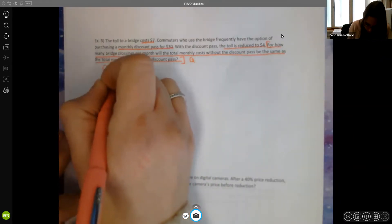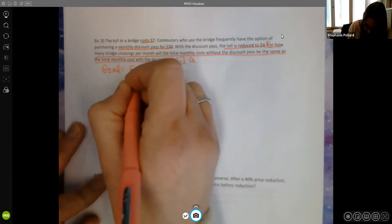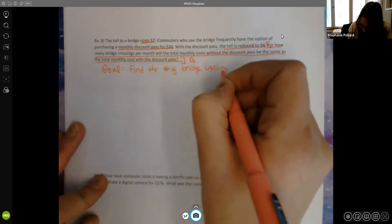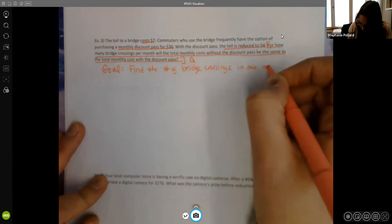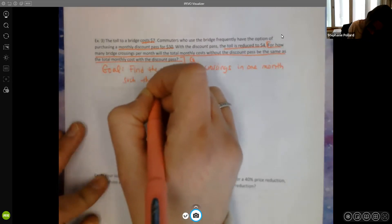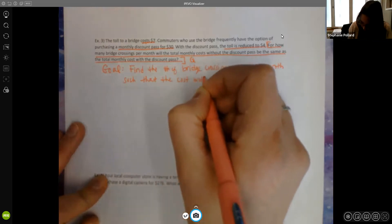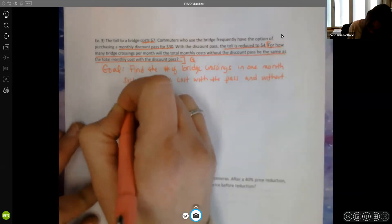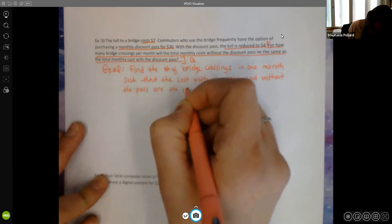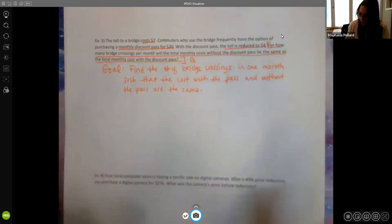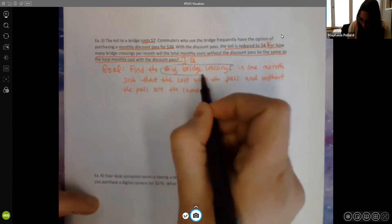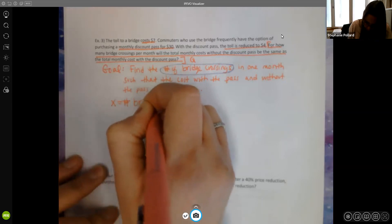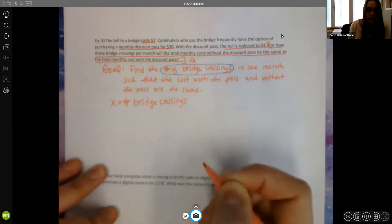So our goal here is to find the number of bridge crossings in one month such that the cost with the pass and without the pass are the same. So we're really looking for here the number of bridge crossings. That's the only thing we're looking for. So that's going to be our variable. So we're going to let X equal the number of bridge crossings in one month.